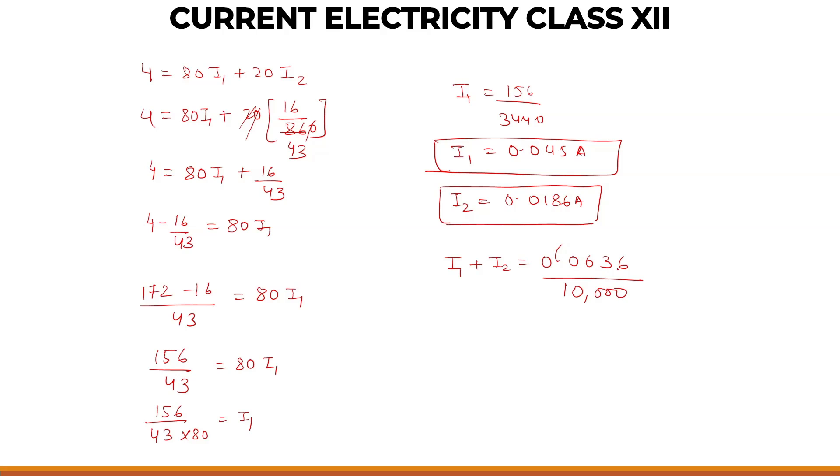So you can write it like 636 divided by 10,000, which is 636 divided by 10 into 10 to the power minus 3. One 10 I left here and 10 to the power minus 3 is milliamps. So 63.6 milliamps. That's the reading of our milliamp meter.